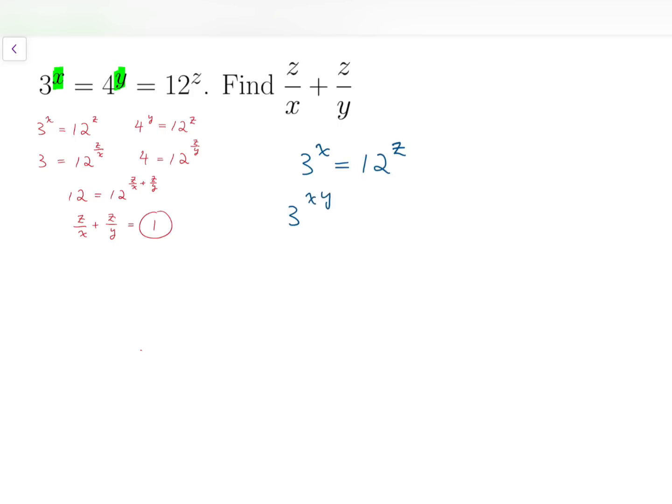So, we have 3 to the power of xy equals 12 to the power of zy. Using a similar approach, starting from 4 to the power of y equals 12 to the power of z, I'm going to bring both sides to the x power.